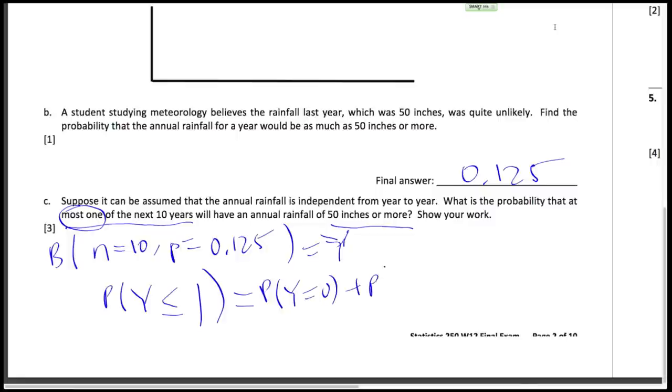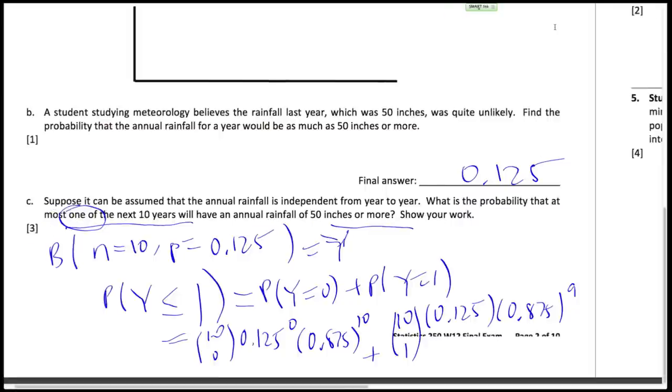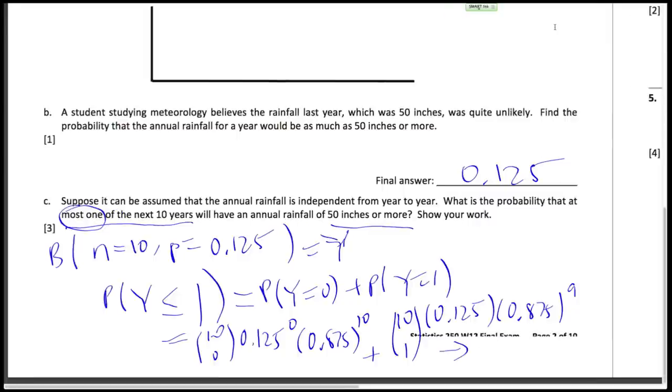Probability that y is less than or equal to one equals probability y equals zero plus probability that y equals one, which equals 10 choose 0 which is 1 times 0.125 to the 0th power times 0.875 to the 10th plus 10 choose 1 which is 10 times 0.125 times 0.875 to the 9th, which gives us a final answer 0.6389.